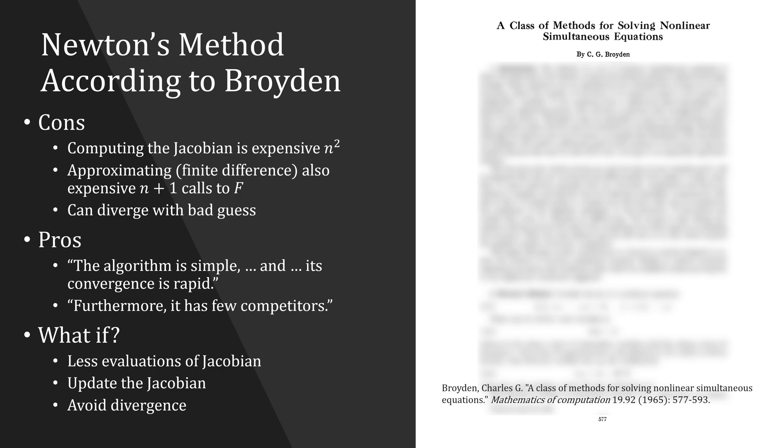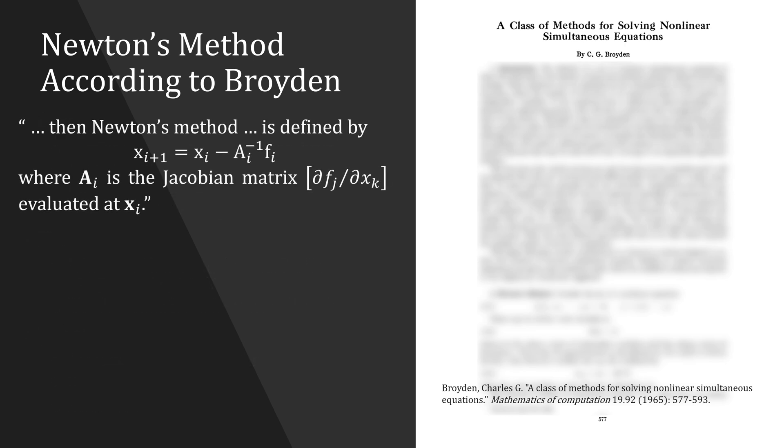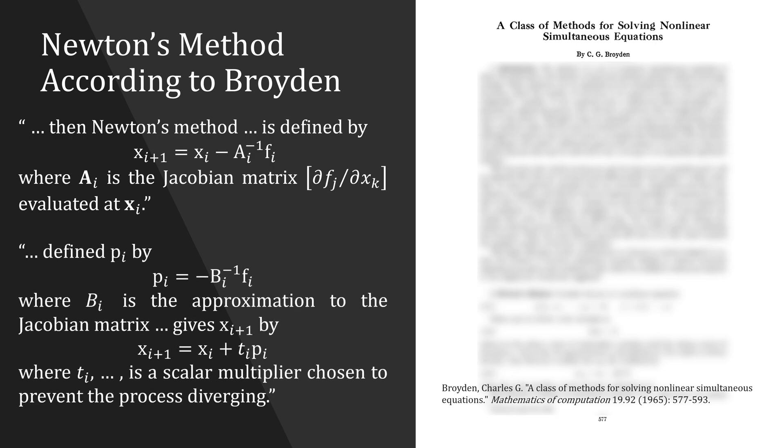What if there were less evaluations of the Jacobian, a way to update the Jacobian, and a way to avoid divergence? Broyden cites Newton's method and then creates a variable he calls B, which is approximation to the Jacobian. He also uses the variable T, meant to avoid divergence, which is a topic I'm not going to cover in this video.